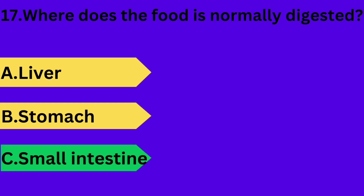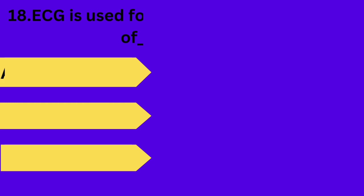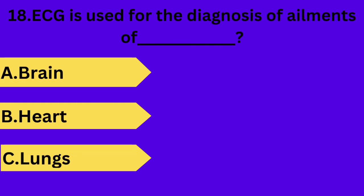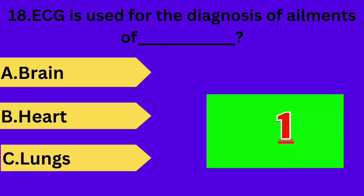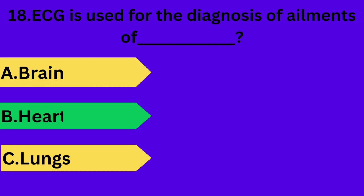And next question is: ECG is used for the diagnosis of ailments of which organ? Option A: brain. Option B: heart. Option C: lungs. Your time starts now. Answer is option B: heart.